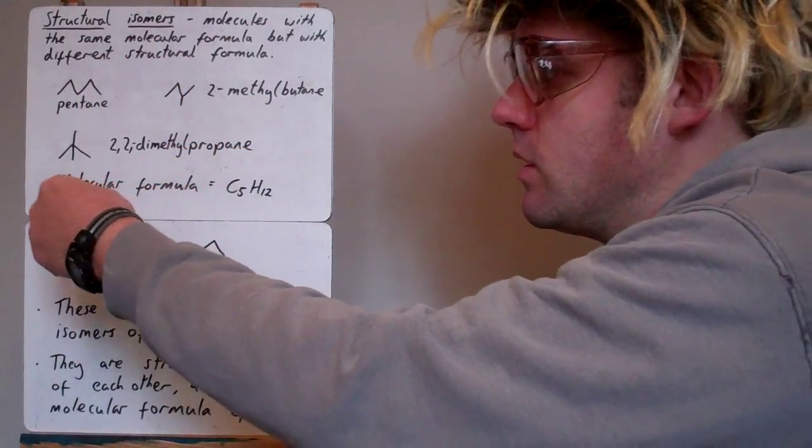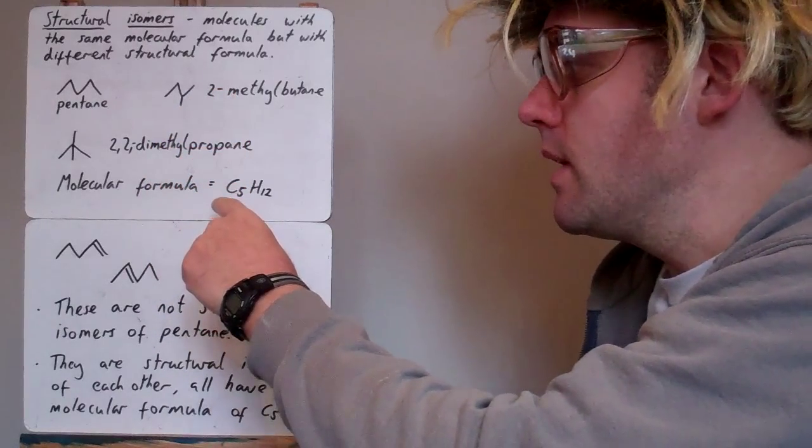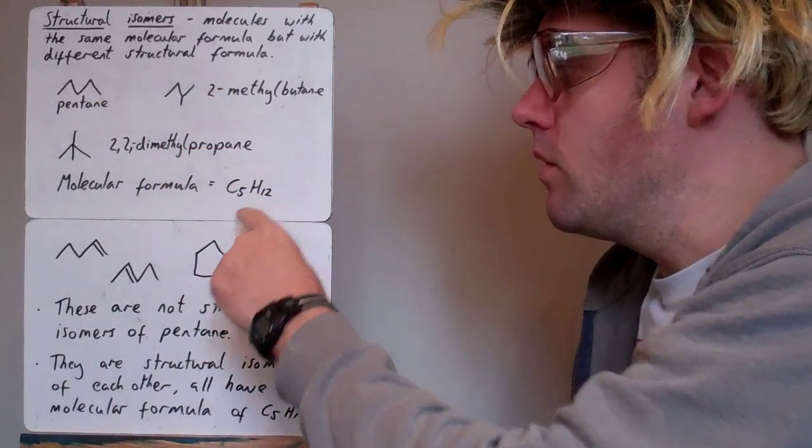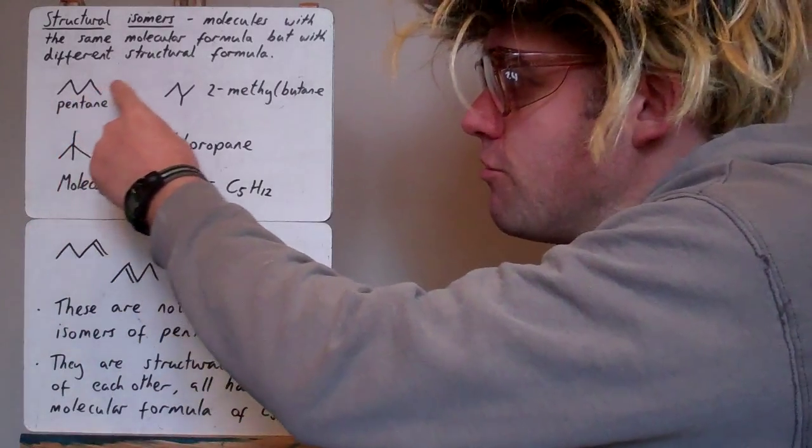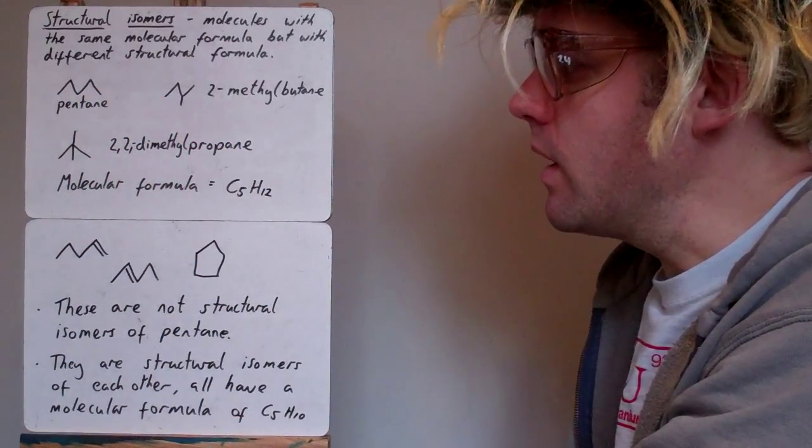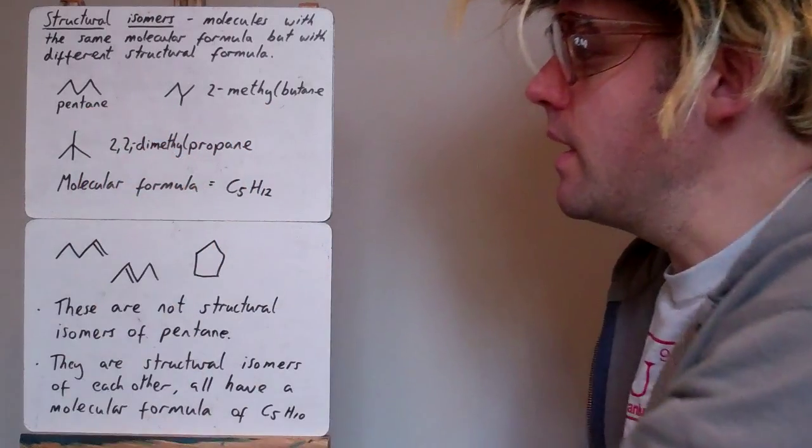So if you look at this screen, this one here at the top first, all of these have 5 carbons and 12 hydrogens. But they're just arranged in different ways. So they are different molecules. They've got different names.